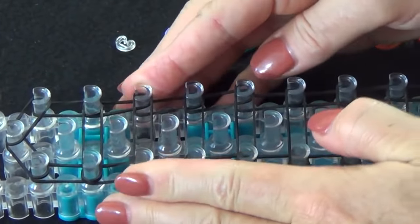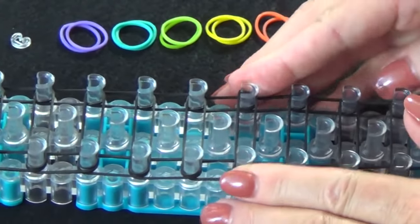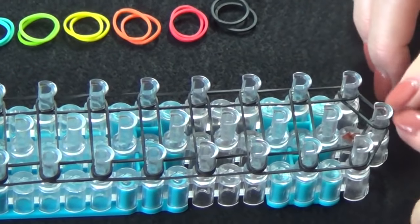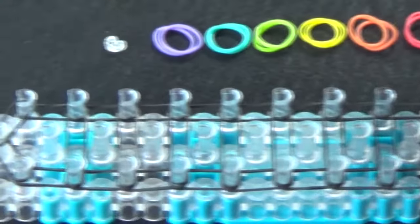Now push all your bands down on the pins, because we have a couple more layers to do for this bracelet. Once those are down, we'll place a center row of bands going up the loom,